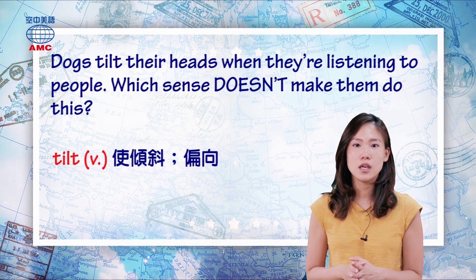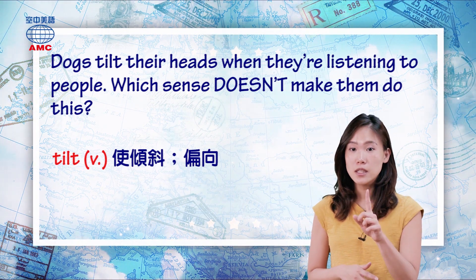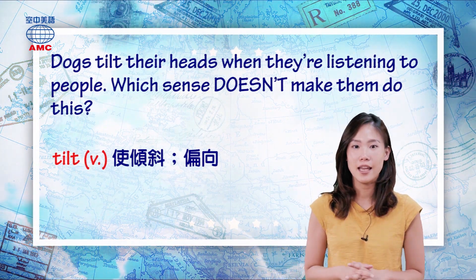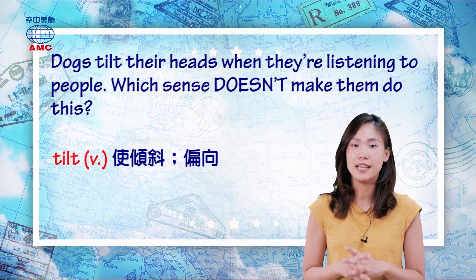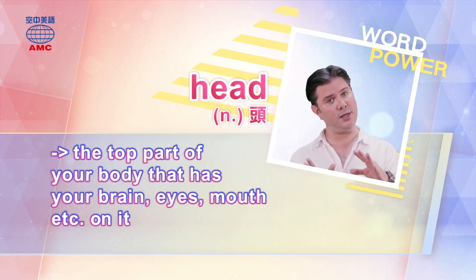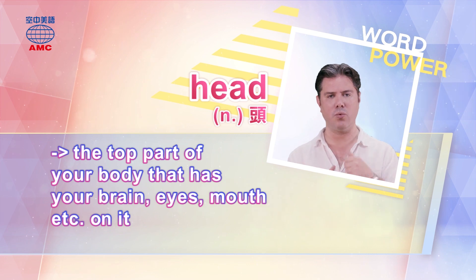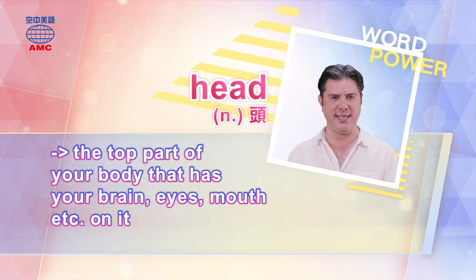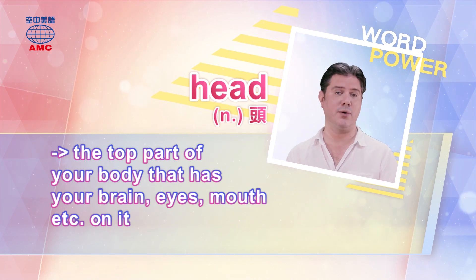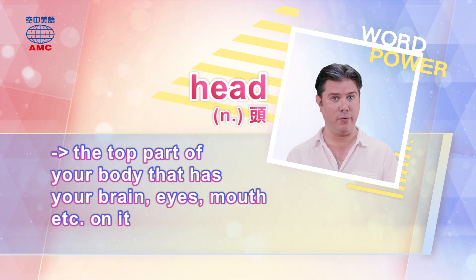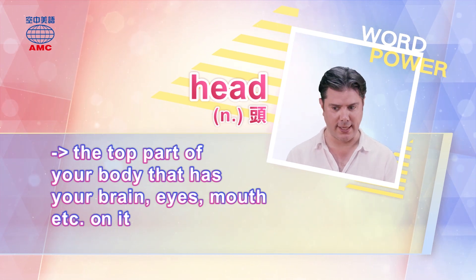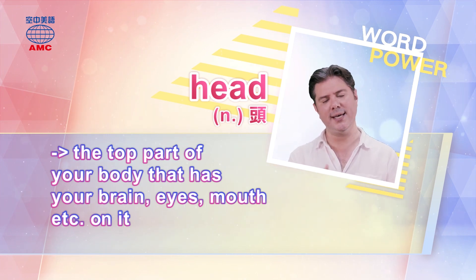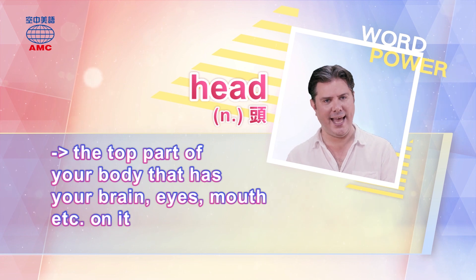狗狗歪头的意思就是dogs tilt their heads. 我们今天的第一个 word power word 单字是 head，H-E-A-D. We're talking about dogs tilting their heads. Head is spelled H-E-A-D. Here we're talking about more than one because there are many dogs and they all have a head, so we're talking about dogs tilting their heads — H-E-A-D-S.